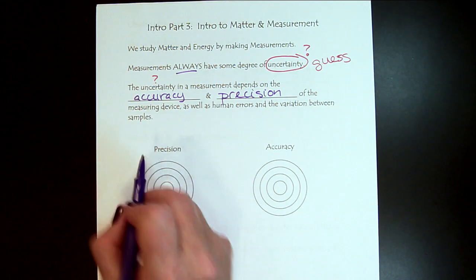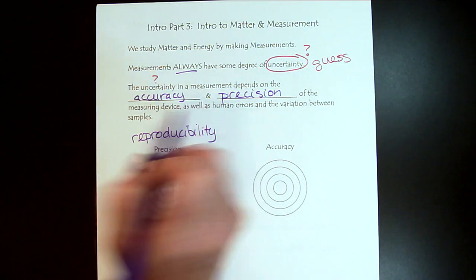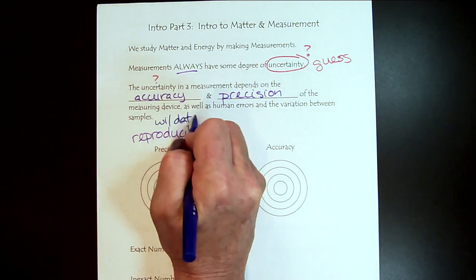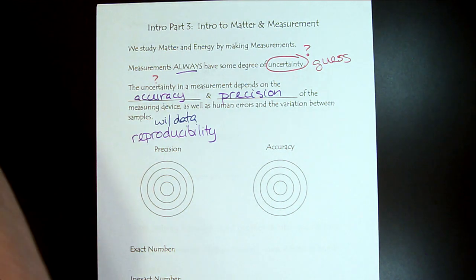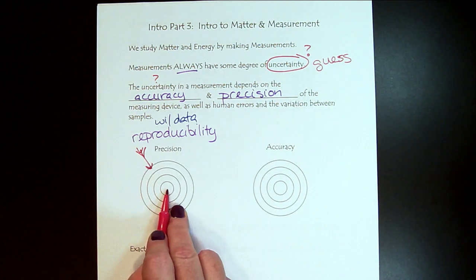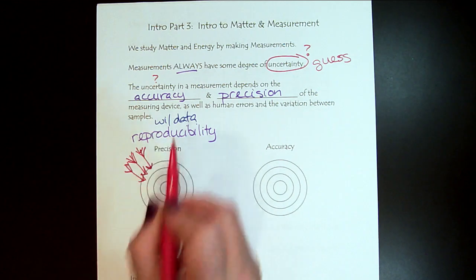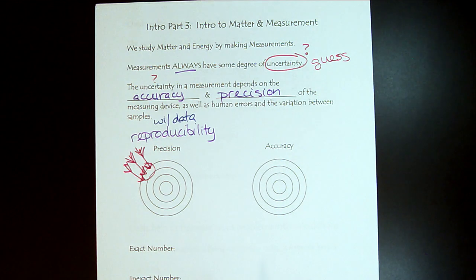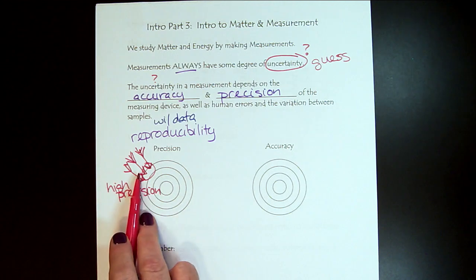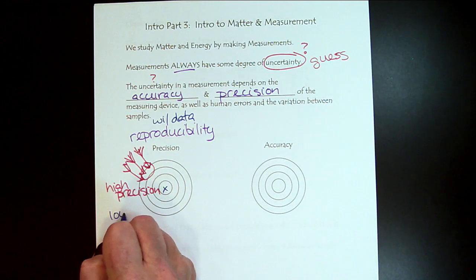When we think about precision, we really want to think about reproducibility. Within the data set, how reproducible is the data? An example here would be that maybe we have a bow and arrow, and if we think about the bullseye as the true value, and our measurements are very precise — we're hitting the same part of the target every time — this would be described as high precision because it's very reproducible. But if our true value is the bullseye, we would say this is low accuracy.